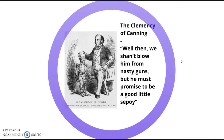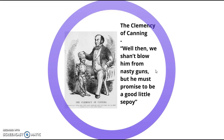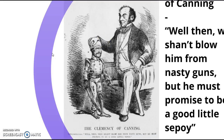Here we have a picture demonstrating the racist feelings. The quote under the picture says: 'Well then, we shan't blow him from nasty guns, but he must promise to be a good little sepoy' — meaning we won't kill him if he promises to behave. Take a moment to look at this picture and find all the clues about imperialist attitudes toward Indian natives — their clothes, facial features, and so on, just like we've done with other images in class. Pause the video, then unpause and move on.